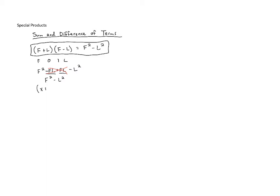So for example if we have X plus four times X minus four instead of going through and foiling everything out first outer inner last we can just take the first term and square it X squared is X squared and then minus the last term squared. Four squared is 16 and that is our answer.